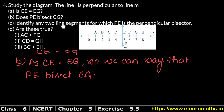Now let's do part c: Identify any two line segments for which PE is the perpendicular bisector. PE is perpendicular (makes a 90-degree angle) and bisects (divides into equal parts). So we need to find line segments that PE perpendicularly bisects. We can take DF, CG, or BH — all of these are line segments for which PE is the perpendicular bisector.